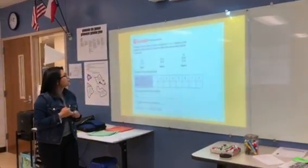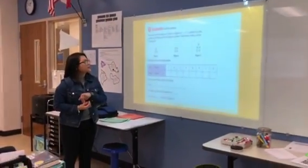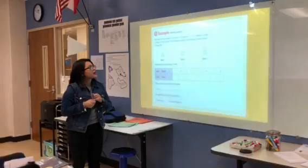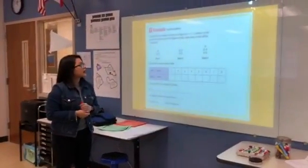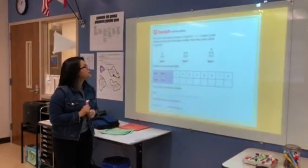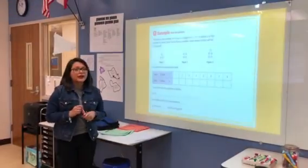Okay, so the rule for the number of circles in a figure is C equals F plus 2, where C is the number of circles and F is the figure number. How many circles will be in figure 8?